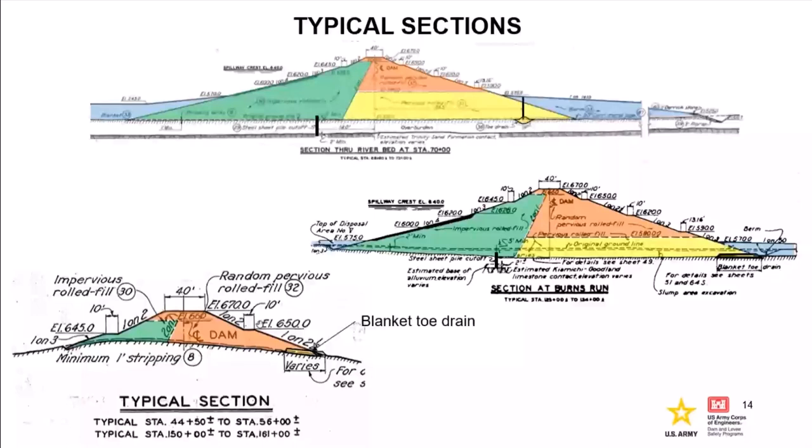Here's a couple of typical cross sections. This top one is at the main river valley, the maximum section. In general, all sections look fairly similar: upstream impervious core, downstream areas in green are random pervious, then pervious fill - more granular. The main differences - Burns Run is that blue area I highlighted, and this one is further up the abutment, a shorter section. But they all share this pervious material. They have upstream cutoff, toe drain. They have a blanket toe drain in this one and here. As you go further up the abutment, they get rid of this pervious material - that's important. They just call the foundation overburden.